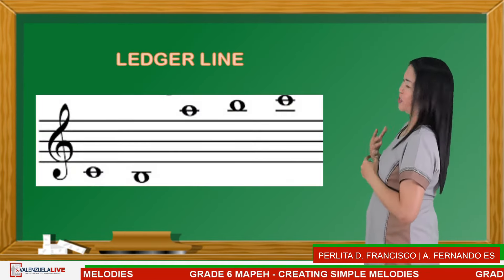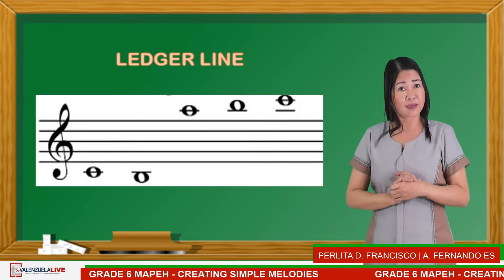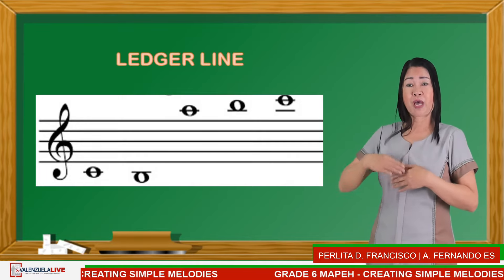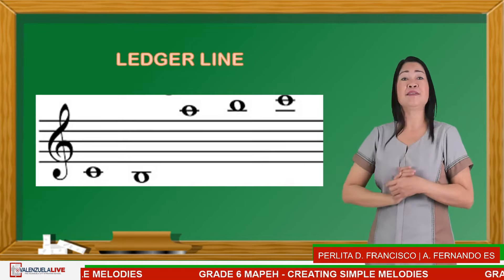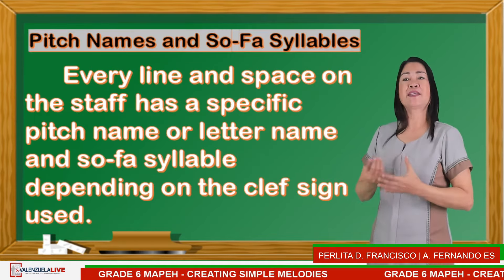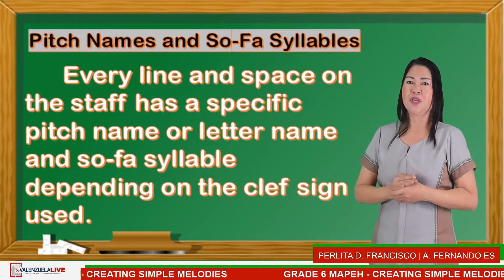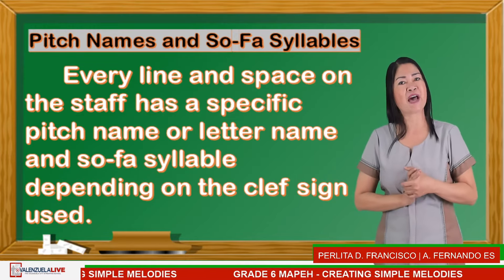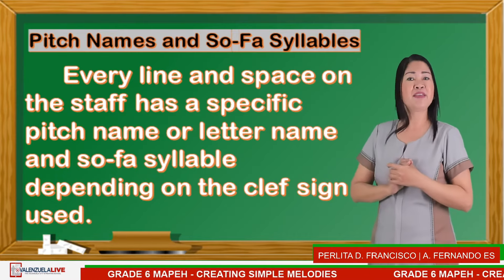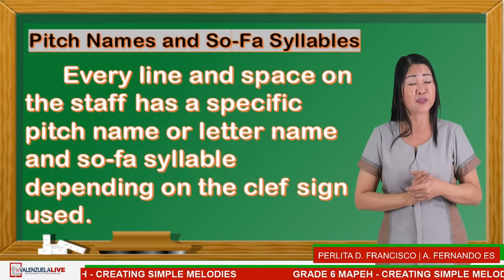These are the ledger lines. Remember that music is infinite or endless, that's why we draw ledger lines below or above the staff. Next are pitch names and solfege syllables. Every line and space on the staff has a specific pitch name or letter name, and solfege syllable depending on the clef sign used.